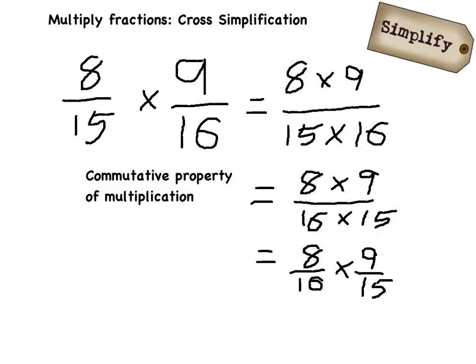So if I use my definition of multiplication of fractions in reverse, I can separate these back out into fractions where I have 8 over 16 as one of the fractions, and 9 over 15 as the other of the fractions.